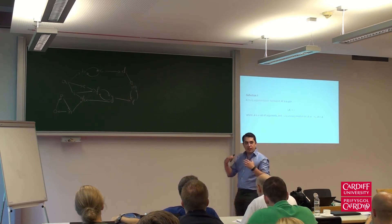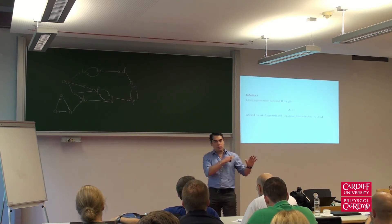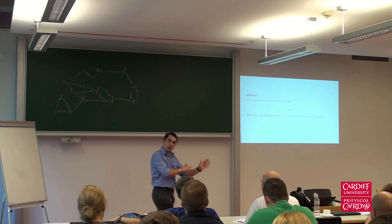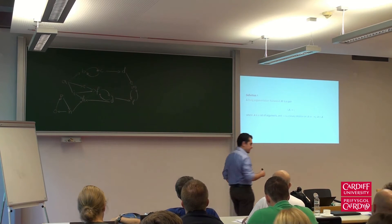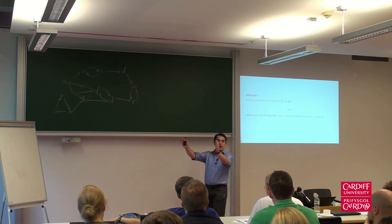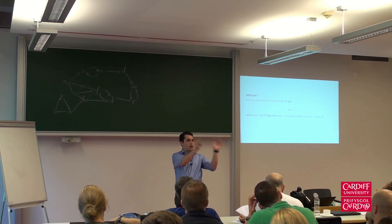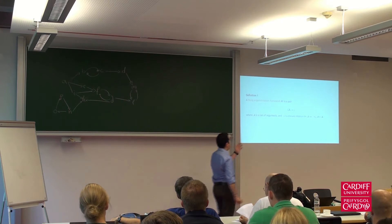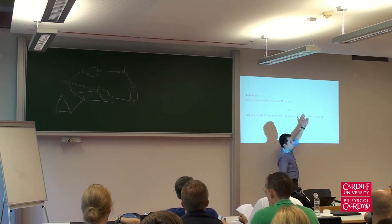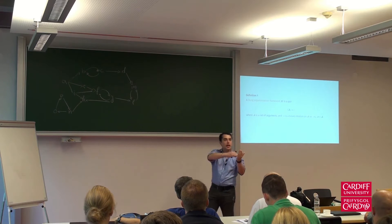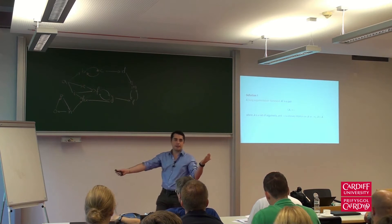There are very few formulae in the slides, and this is one of them. It's pretty important, but at the same time it's pretty easy. Dung's argumentation framework is a set of arguments and a binary relation on that set, where one argument attacks another argument. That's it.